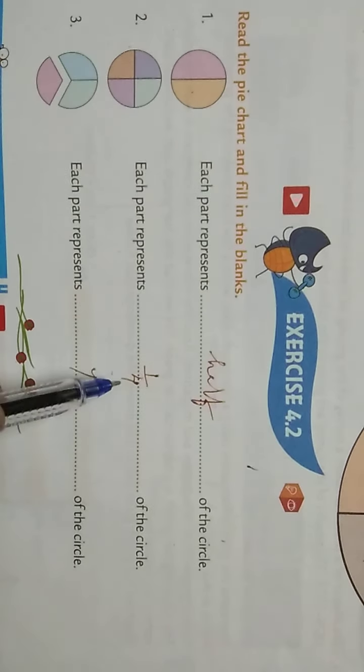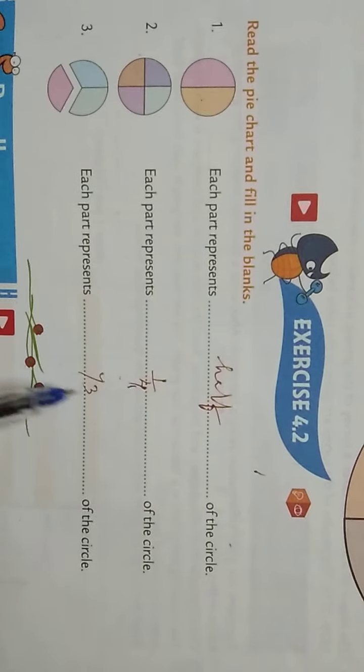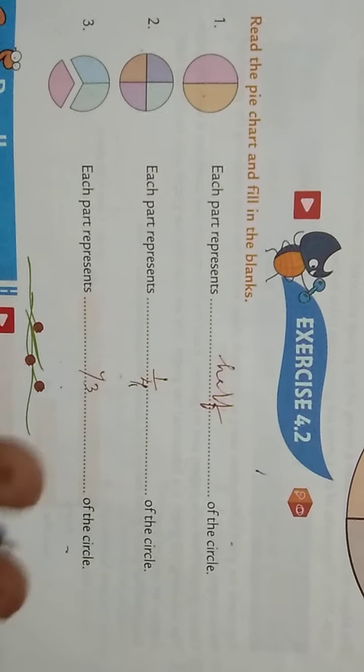Here the circle is divided into three parts, so each part represents 1 by 3 of the circle. Just understand it, and there's one more thing I have to show you.